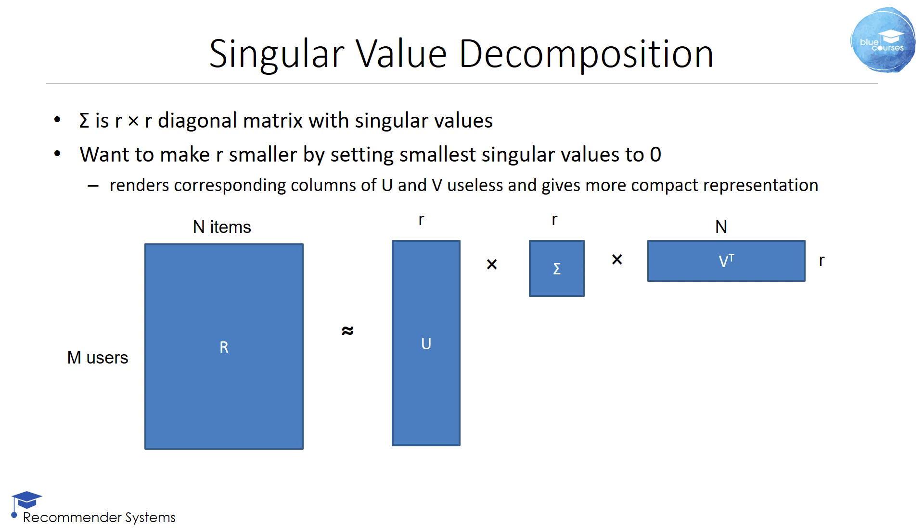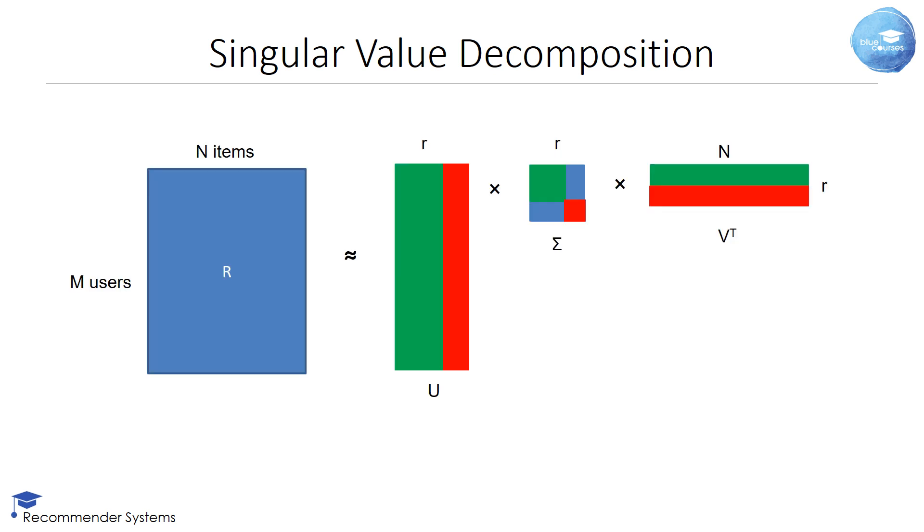The aim of SVD is now to make R smaller by setting the smallest singular values to 0 since these are assumed to correspond to noise. The effect of this is that it renders the corresponding columns of U and V useless, which results into a more compact representation.